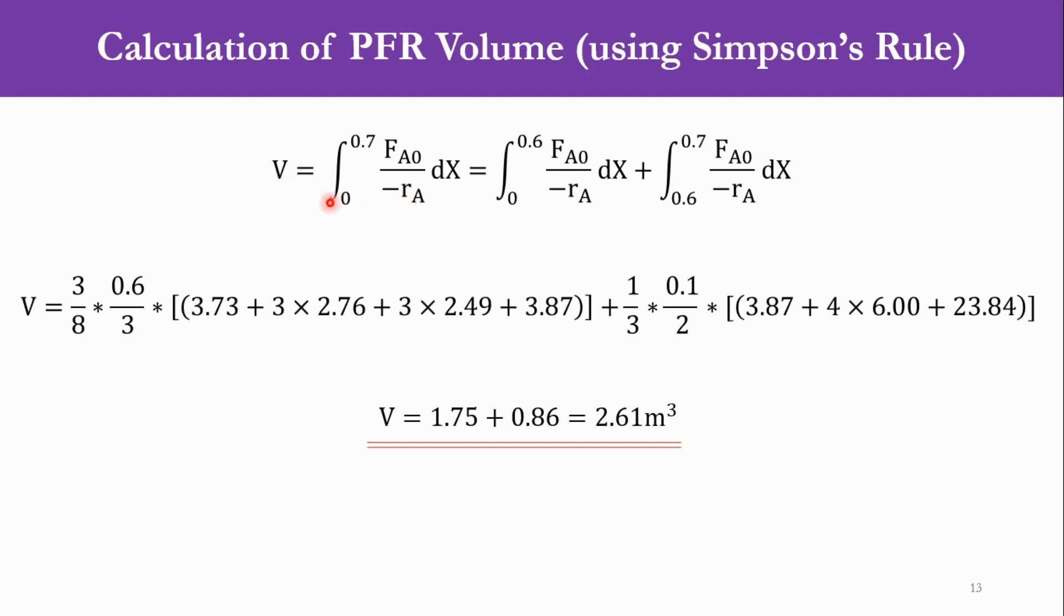This is how it is solved in the next part: V equals integral 0 to 0.7 of FA0 over -rA into dX, and it is divided into two parts, 0 to 0.6 and then 0.6 to 0.7. And now applying Simpson's rule for 0 to 0.6, you will get the four points, and accordingly once you put the values of FA0 over -rA at each point, you get the volume as 2.61 cubic meters.